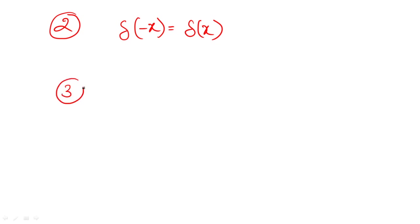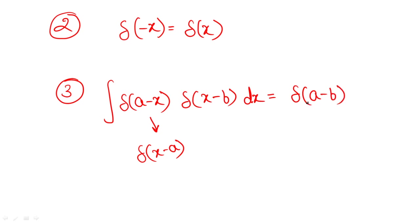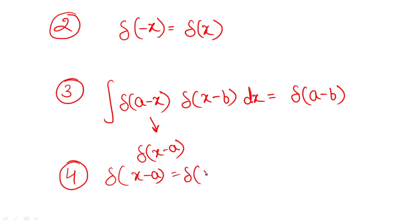The third property: if you have the integration of delta(a minus x) times delta(x minus b) dx — and since it's an even function you can also write delta(x minus a) and delta(b minus x) — the result is delta(a minus b). This is another important property that makes such questions easy to solve if you are familiar with it. The fourth property, related to the second, states that delta(x minus a) equals delta(a minus x), since taking the negative sign common relates back to the even function property.